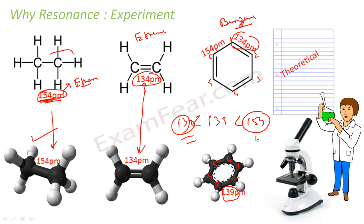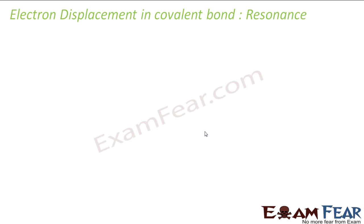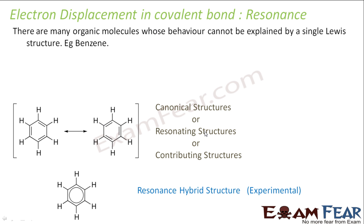The value 139 picometers lies between the double bond length of 134 and the single bond length of 154, so they were amazed why it is between double bond and single bond. They came up with a concept called resonance. They said that in benzene there is no pure double or single bond — it is a resonance structure where electrons are delocalized. To explain this behavior of uniform bond length, the concept of resonance was developed.